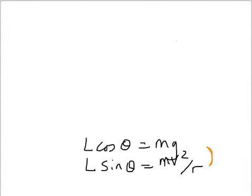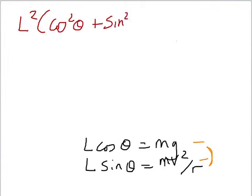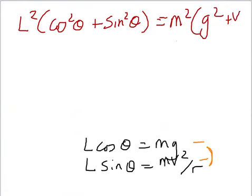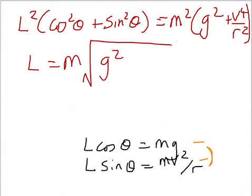However, there is an easy trick here. As you may remember, cos squared plus sine squared equals one. So if we square this and square that and add them together, we get L squared cos squared theta plus sine squared theta, which is equal to one, equals M squared G squared plus V to the fourth over R squared. So that gives us that L equals M root G squared plus V to the fourth over R squared.